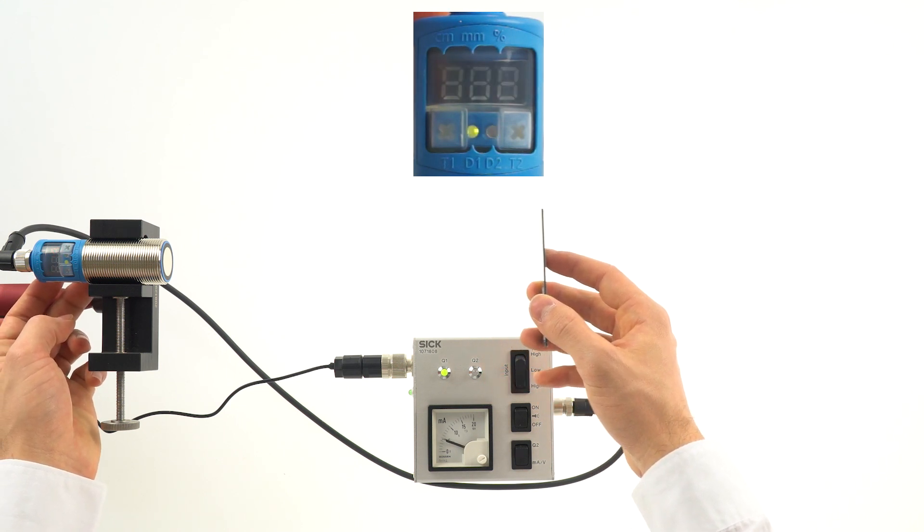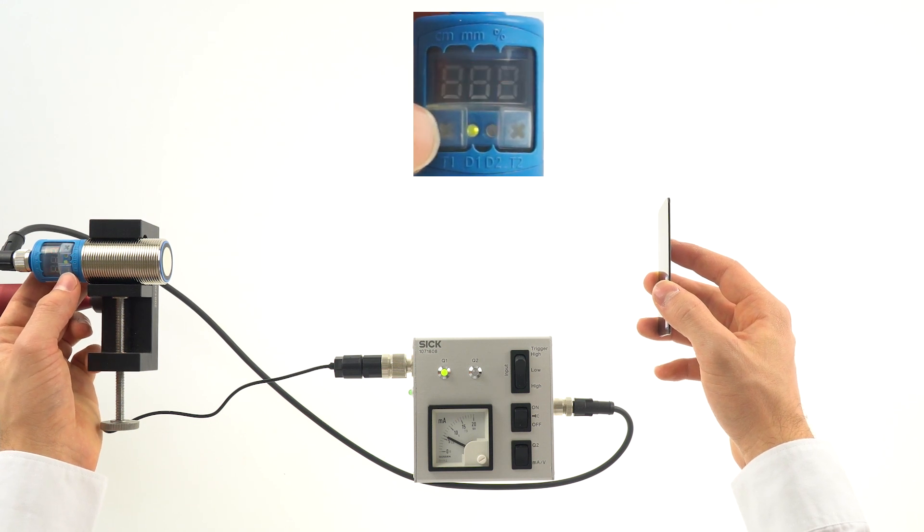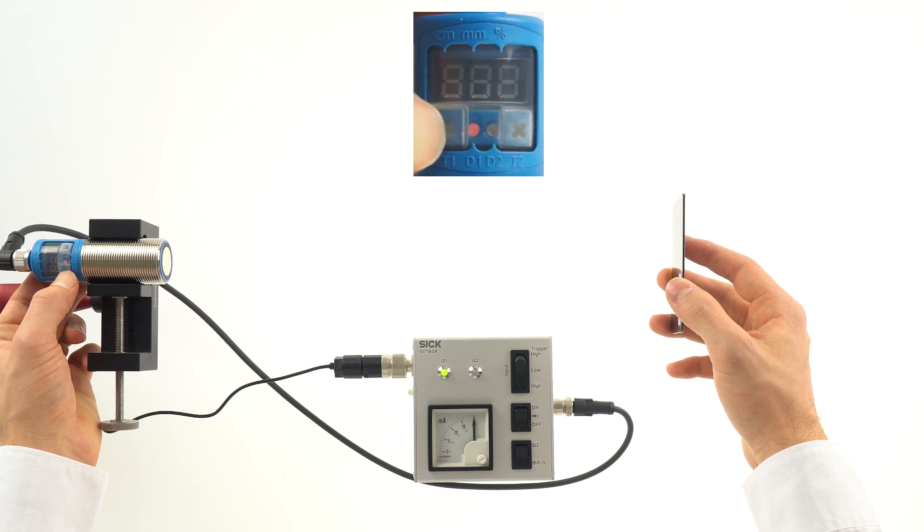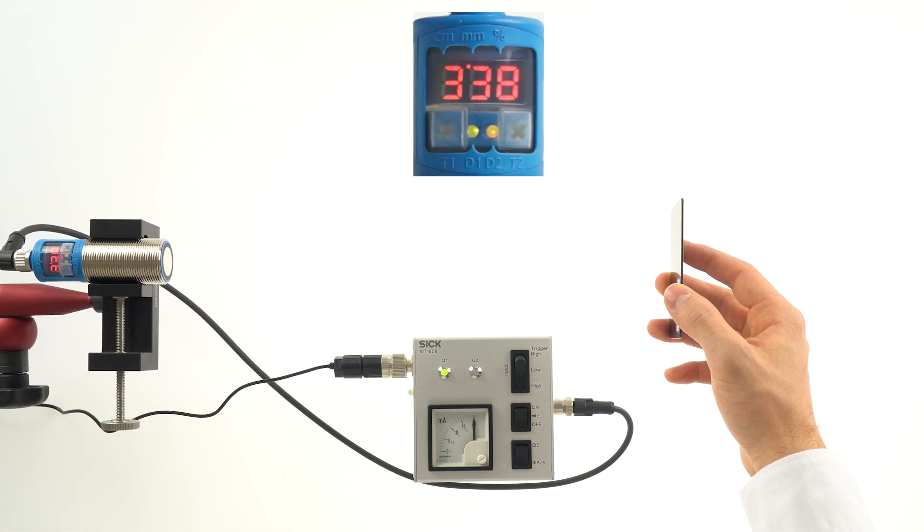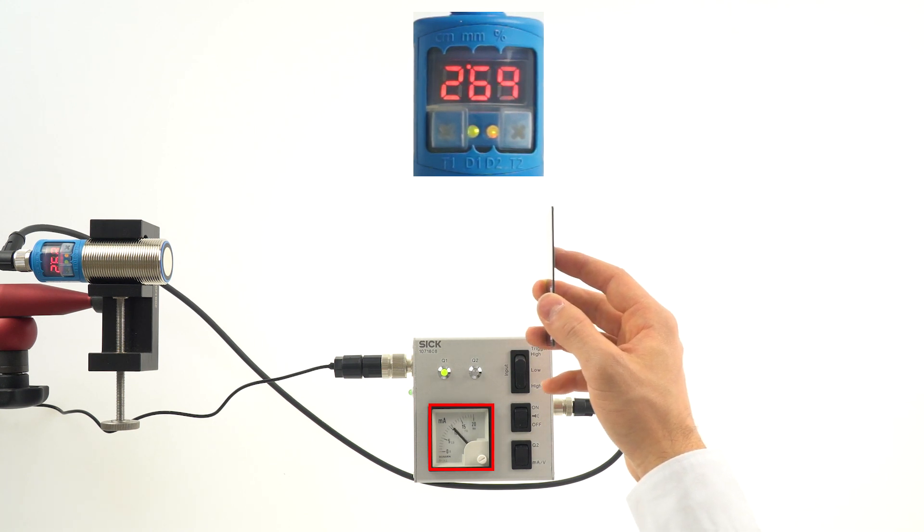Afterwards, place the object in a farther position as the far distance reference for the 20 milliamp value. Press and hold the T1 key until end appears in the display. The analog scaling is now saved.